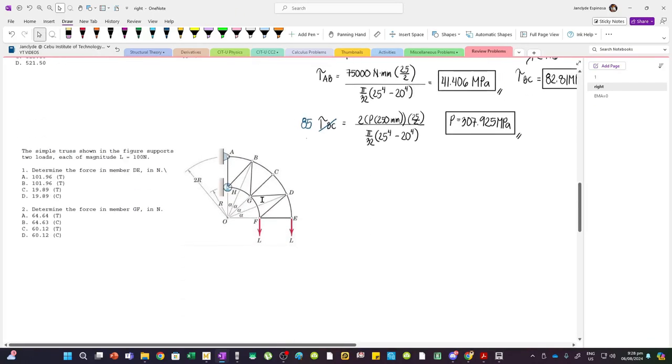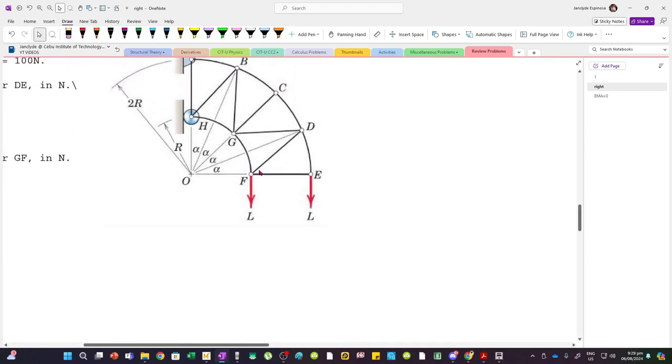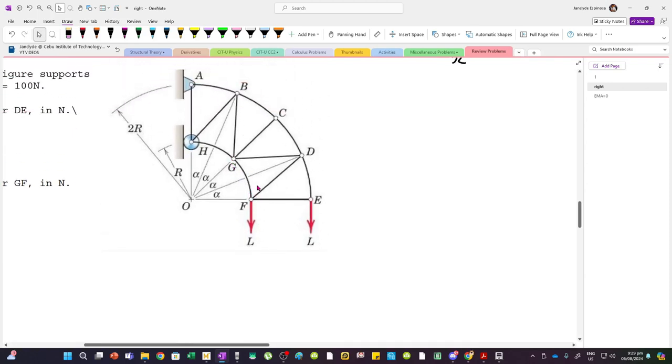For the next problem, we have this simple truss shown. Simple truss but complicated because there are curved members. But essentially, our members are two-force members.